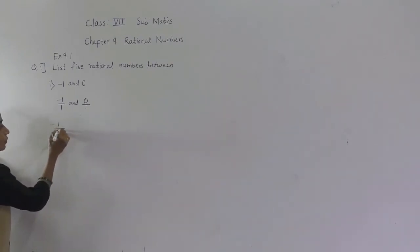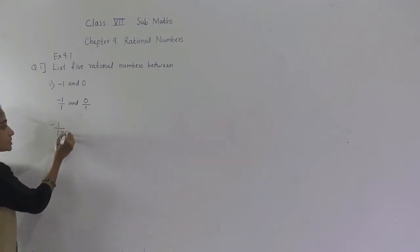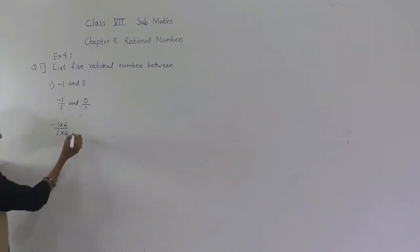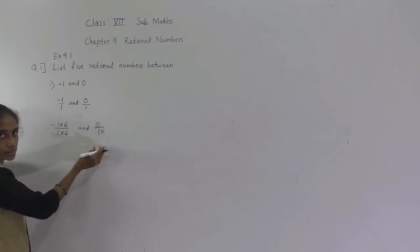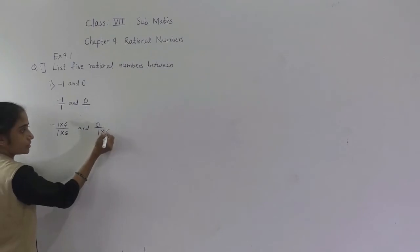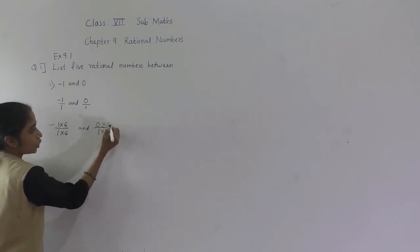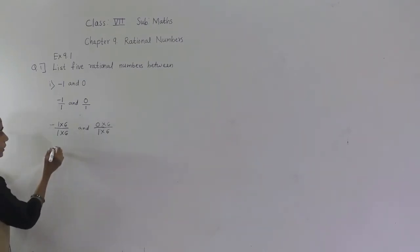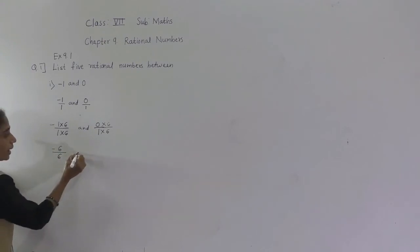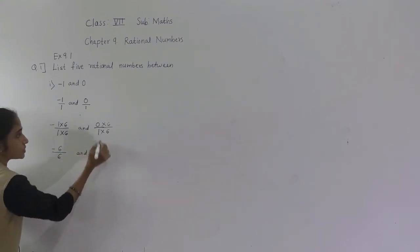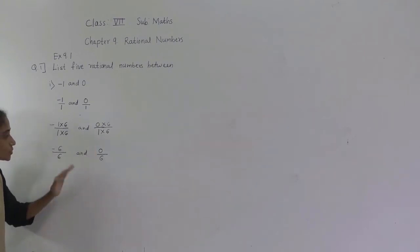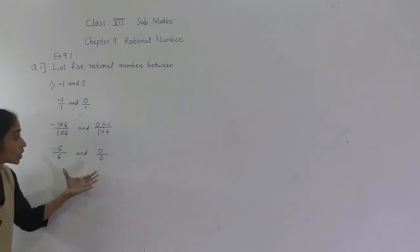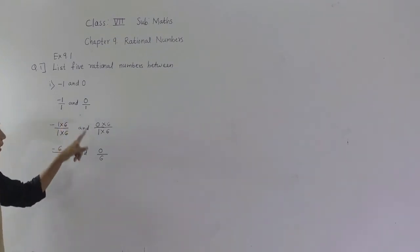Minus 1 upon 1 multiplied by 6 on both numerator and denominator gives minus 6 upon 6. And 0 upon 1 multiplied by 6 gives 0 upon 6. So now we need to find 5 rational numbers between minus 6 upon 6 and 0 upon 6.